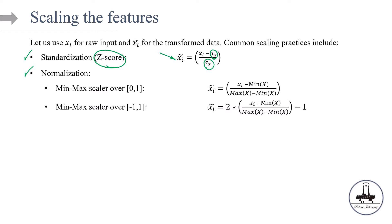For min-max scaling over the 0–1 range, we take the random variable, subtract the minimum, and divide by the range — this guarantees values fall between 0 and 1. To shift to a -1 to 1 range, multiply by 2 and subtract 1 from each side. These are the formulas used for normalization.